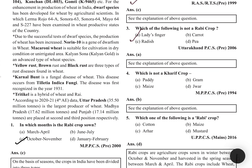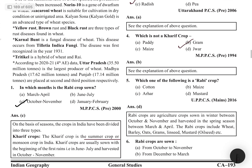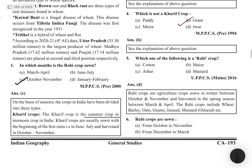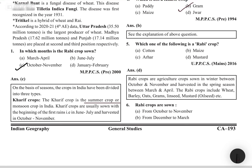MCQ: Which is not a Kharif crop — paddy, maize, gram, or jowar? Gram (chana) is not a Kharif crop. Chana is harvested in winter and belongs to the Rabi category. MCQ: Which of the following is a Rabi crop — cotton, maize, arhar, or mustard? Mustard (sarsoon) is a Rabi crop.